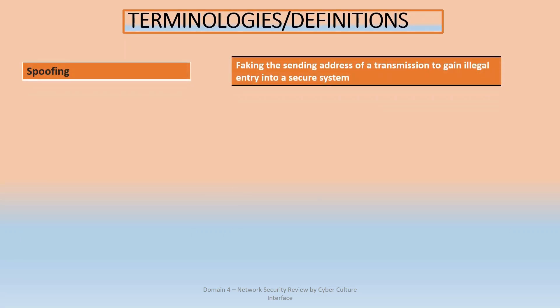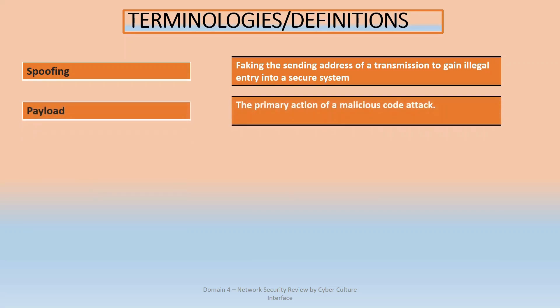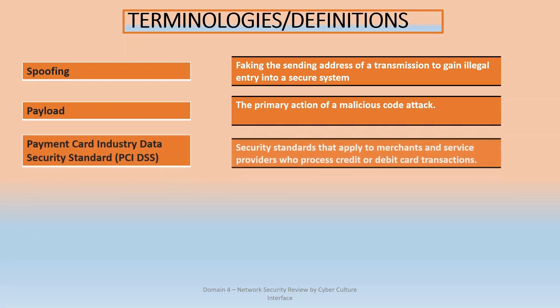Spoofing is faking or falsifying the sending address of a transmission to gain illegal entry — you are pretending to be someone else to gain access into a secure system. A payload is the primary action of a malicious code attack. A payload can be configured to do different things, and the primary action of the malicious code is what is called a payload.